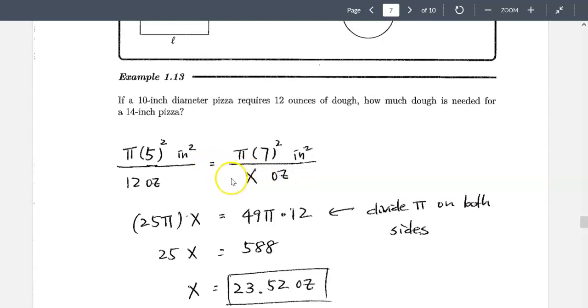So we have the area to area on the top and then the amount of dough, ounce to ounce on the bottom. Once you set up correctly, then you can apply once again cross multiply, solve for x, then that tells you how much dough you need. In this case 23.52 ounce of dough.